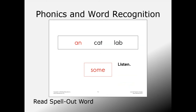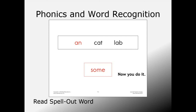A spell-out word is taught with the I do, we do, you do model. You say the word, spell the word, then say the word again. For 'some,' the teacher says 'Listen—some. S-O-M-E, some.' Students do it together, then independently: 'Some. S-O-M-E, some.' This differs from how sound-out words are taught, and the repetition of spelling and saying the word, as well as the I do, we do, you do model of instruction, is incredibly helpful to students.